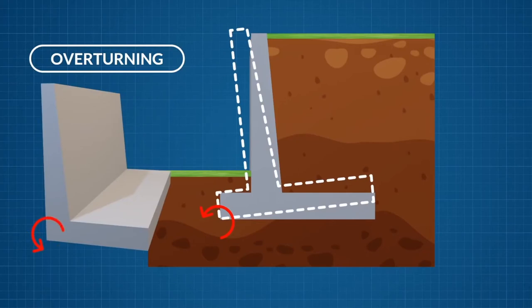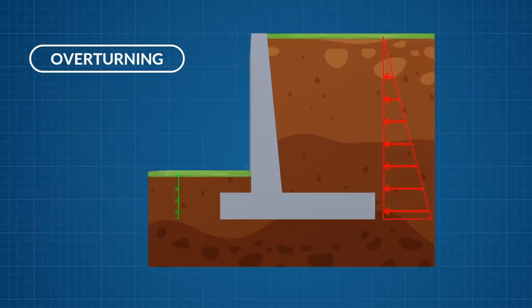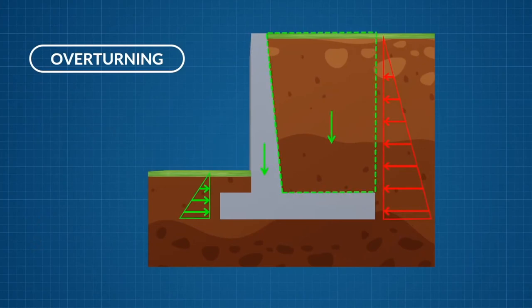The active earth pressure acts as a destabilizing moment on the wall and the passive earth pressure will act as a stabilizing moment. The weight of the soil on the heel slab will act as a stabilizing moment.